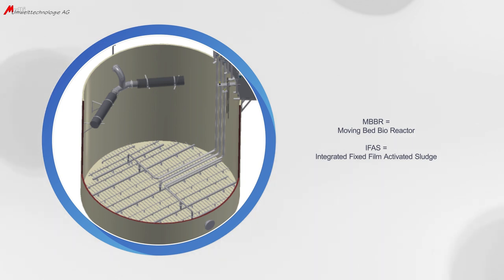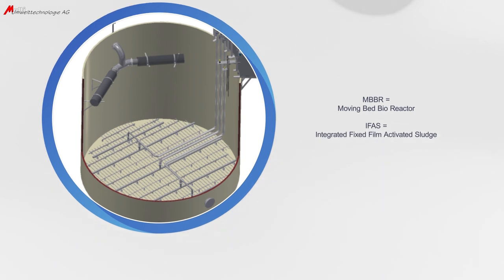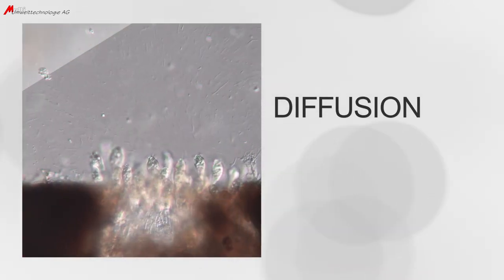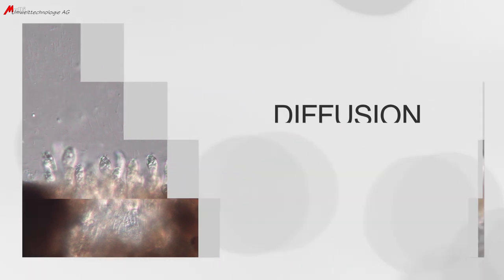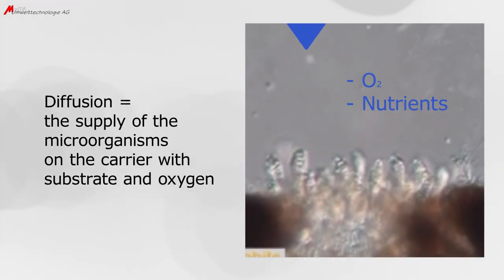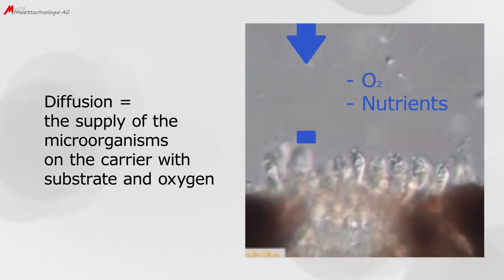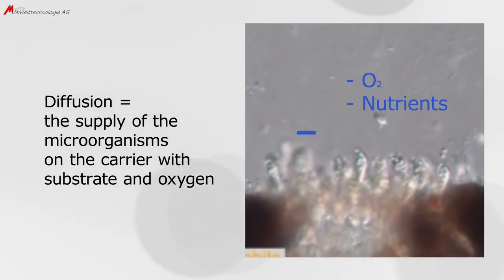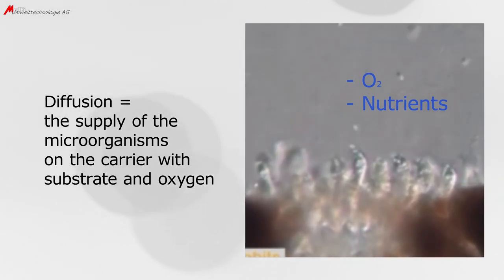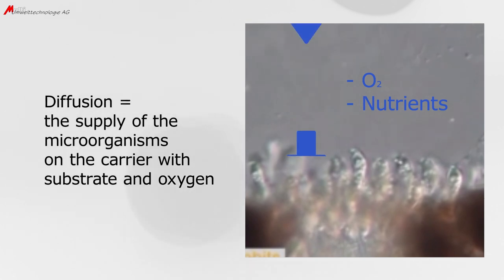The Mutag Biochip provides a lot of advantages, and we will now especially focus on the subject of diffusion. As known from biochemistry and cellular biology, the exchange of substances and oxygen is essential for cells as a precondition to uphold their metabolism. In order to keep them alive and active, the microorganisms need to be supplied with nutrients and oxygen, which leads us to the topic of diffusion and diffusion depth.